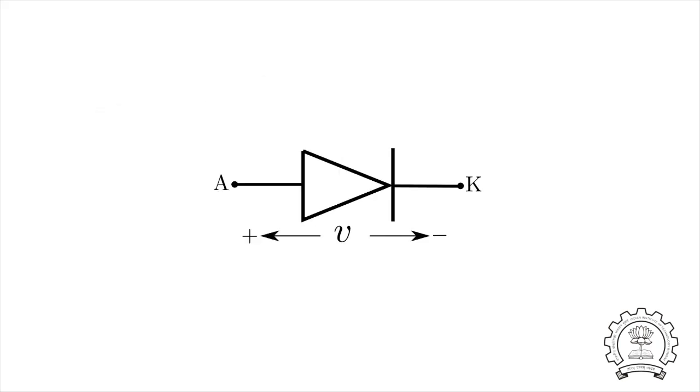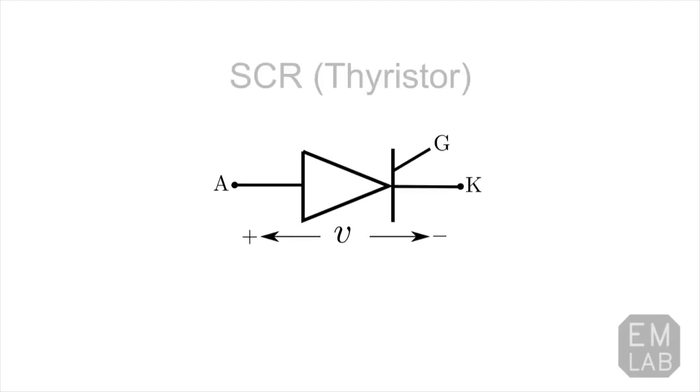You know that a diode will start conducting when we are applying a positive voltage across the anode and cathode. This voltage should be greater than the forward blocking voltage. What if there is a diode-like device which can be turned on only when we are applying a gate signal? This device is called an SCR or thyristor.